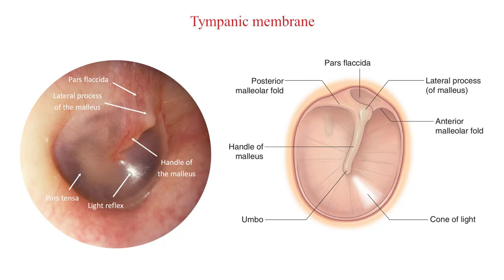The tympanic membrane is slightly concave when viewed from the external acoustic meatus, and the umbo is the most depressed portion of this concavity. Although most of the tympanic membrane is invested with fibrous tissue, the pars flaccida is not, and this flaccid part may be seen in the superior quadrant of the tympanic membrane. On either side of the pars flaccida is a recess consisting of the anterior and posterior malleolar folds. This tight binding with the membrane and malleus permits ready transmission of acoustic energy from the tympanic membrane to the ossicular chain.